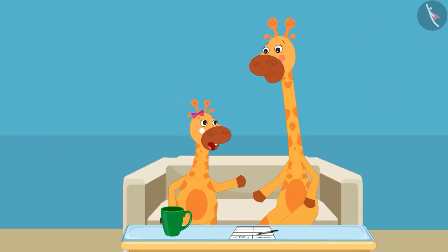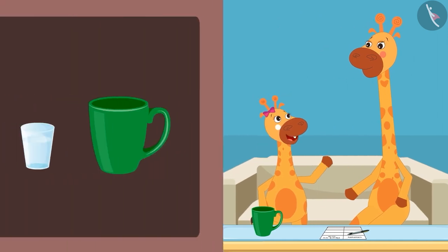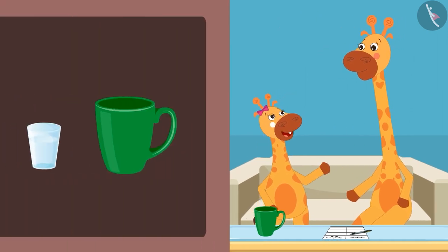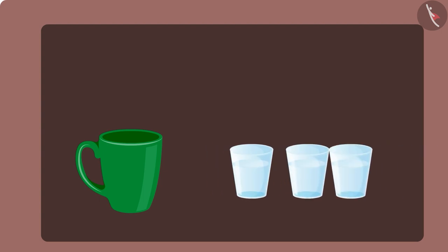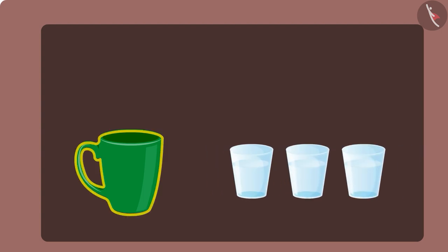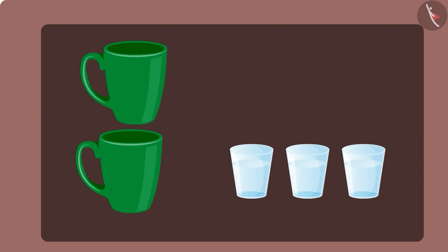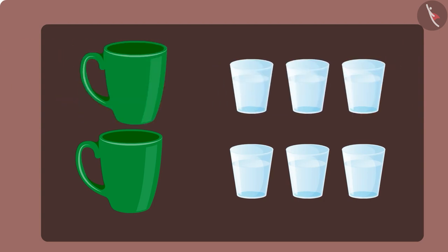I drink five glasses of water a day, but the glass is much smaller than a mug. Let's see how many glasses of water can be filled with a mug. Children, can you tell how many glasses of water you can fill using a mug of water? A mug can fill three glasses of water. So if one mug fills three glasses, then two mugs will fill six glasses of water.